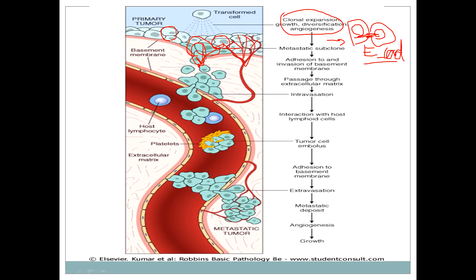Before invading the extracellular matrix, cells cause adhesion and then invade. For degradation of the extracellular matrix, we need proteases, cathepsinases, and collagenases. Matrix metalloproteinases cause degradation of this extracellular matrix. Once the tumor cell is going into the ECM, there will be intravasation within the vessel, and then the cells interact with host cells.